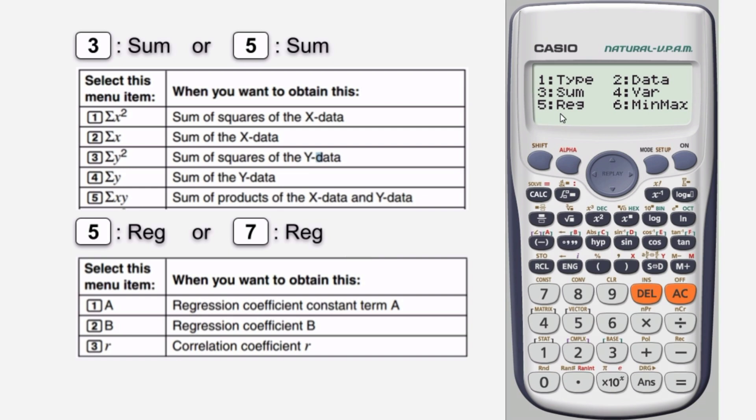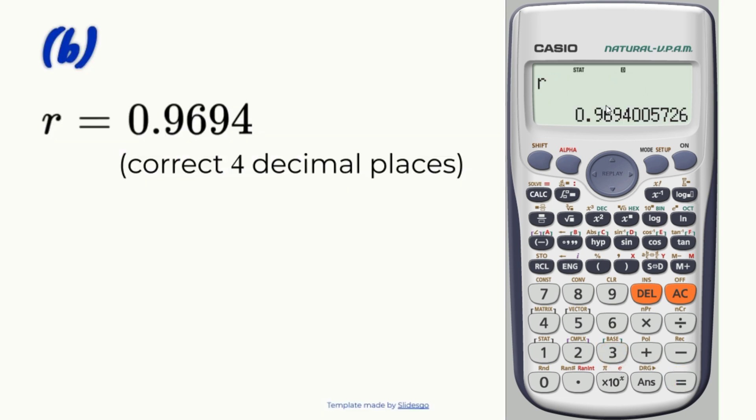Any of your choice will lead to this screen. To find the coefficient of correlation r, press 3 then press equals, and the answer is 0.9694 correct to four decimal places.